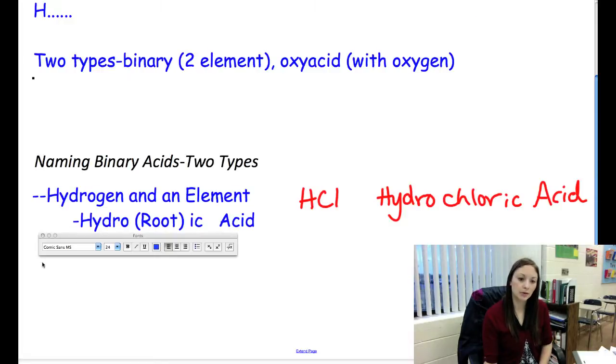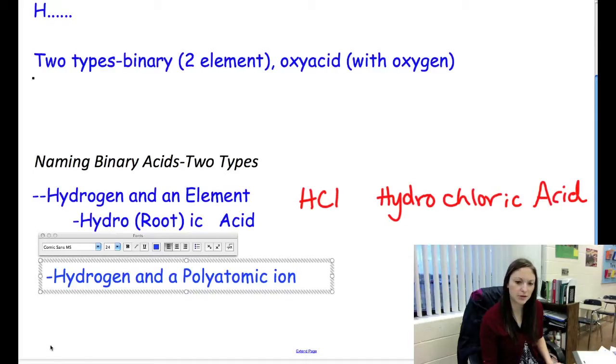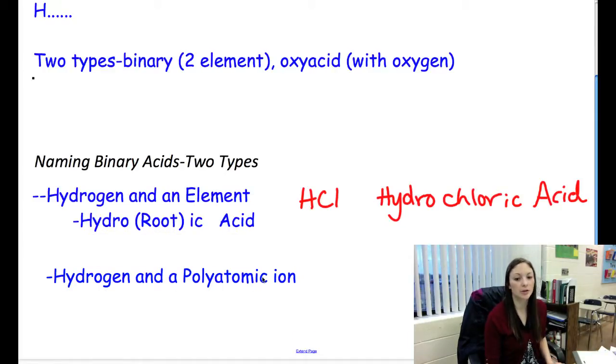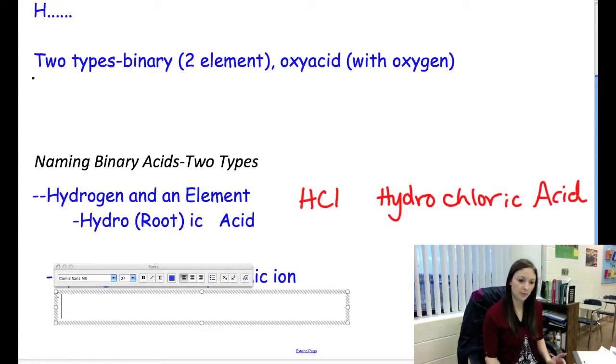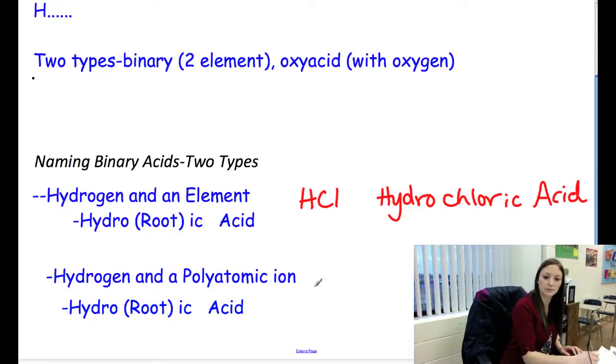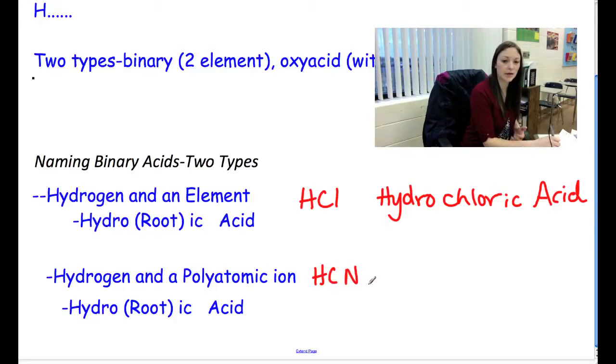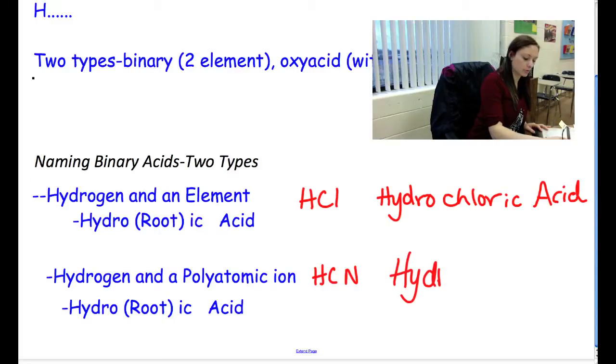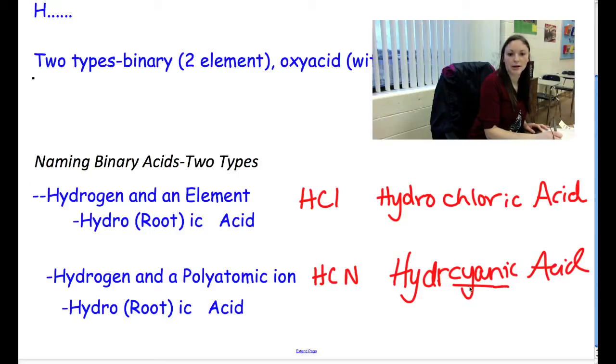If we can have hydrogen and an element, we can also have hydrogen and a polyatomic. But these are ones that are going to be the polyatomics without oxygen. These are not nearly as common. You name these the same. You put hydro, the root of whatever the polyatomic ion is, you put -ic, and you add acid. And I'll give you here one of the only examples. You can have HCN. There's no oxygen there. It's not an oxyacid, but it's also not a single element. So it kind of gets pushed in this binary acid part. So we would call that hydrocyanic acid. Cy here is because this is cyanide. So that cyanide gets changed to just the cyan, that's the root, and then we add -ic acid.